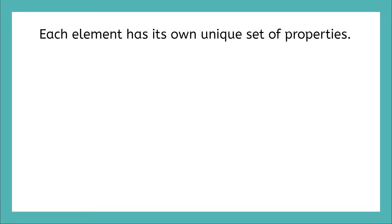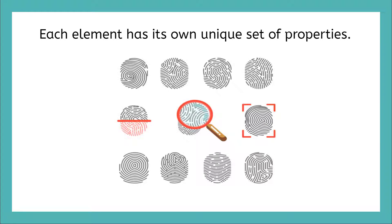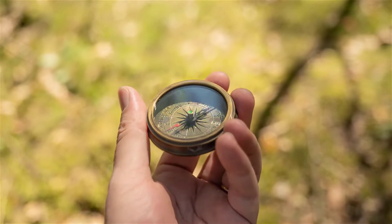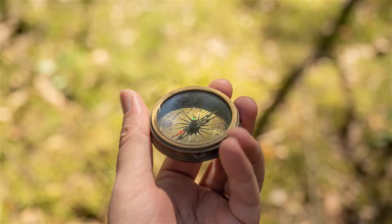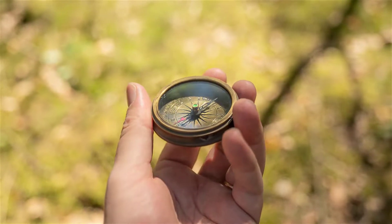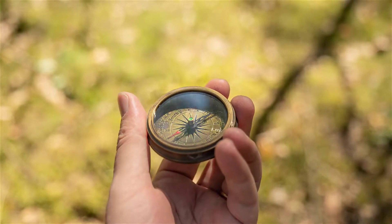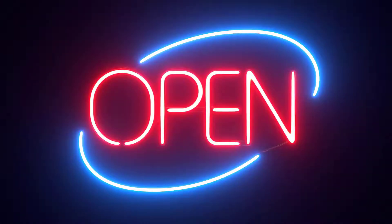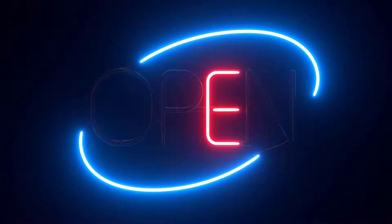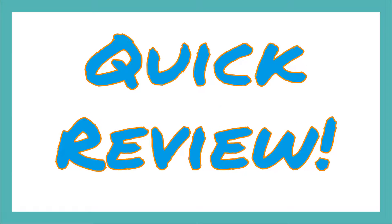Each element has its own unique set of properties different from the set of properties of any other element. You can think of it as its own unique elemental fingerprint. For example, the element iron is a solid that is attracted by a magnet — it can also be made into a magnet like the compass needle. On the other hand, the element neon is a gas that gives off a brilliant glow when electricity flows through it. These signs light up because they contain neon.